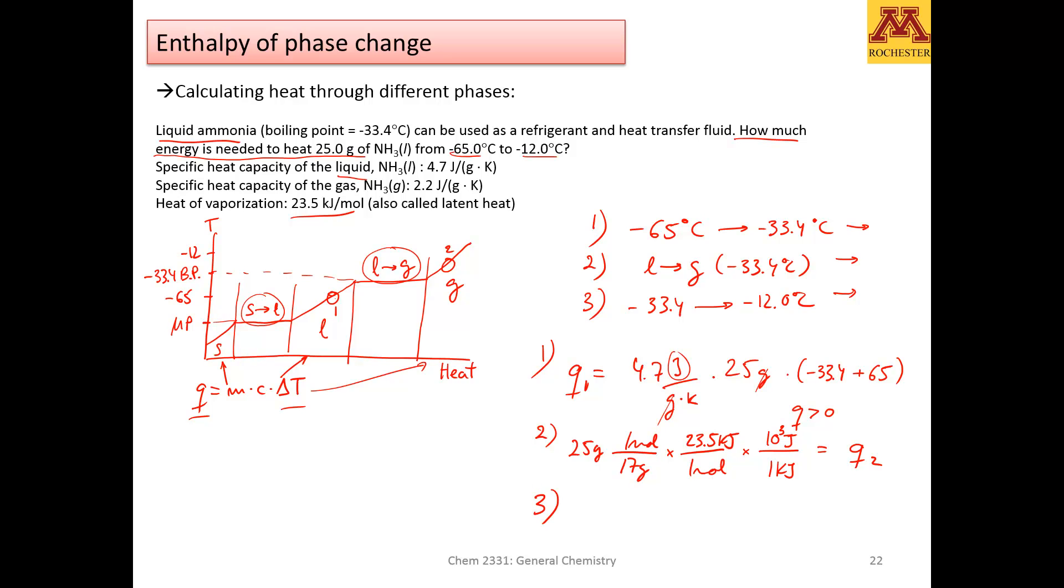And finally, when going from negative 33 to negative 12, this will be a very similar process as Q1, just that we will be using a different heat capacity. In this case, Q3 is the heat capacity of the gas. Now we have gas, and that's 2.2 joules over gram and kelvin times the 25 grams. The 25 grams of ammonia have not gone anywhere. They are still there, even though they are vapor now.